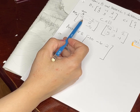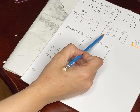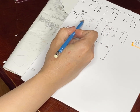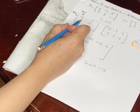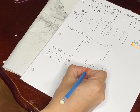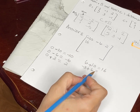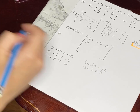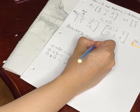Next, second row times first column: three times two is six, two times five is ten — so that's 16. Then second row times second column: three times negative one is negative three, plus two times three is six — negative three plus six is positive three.